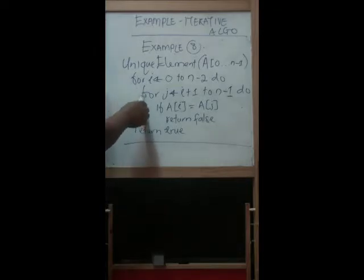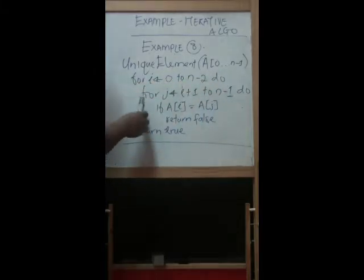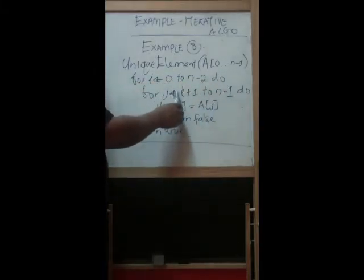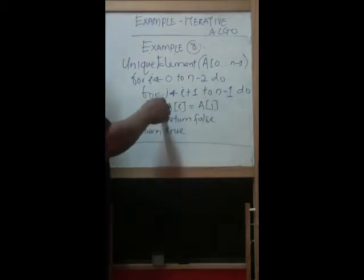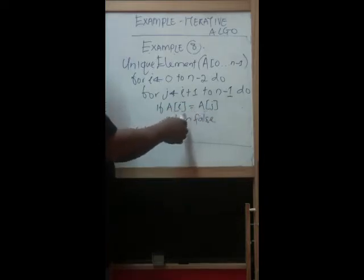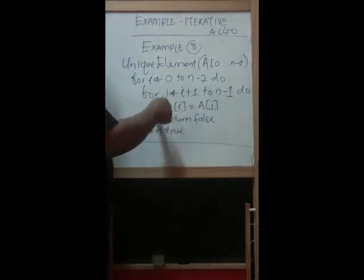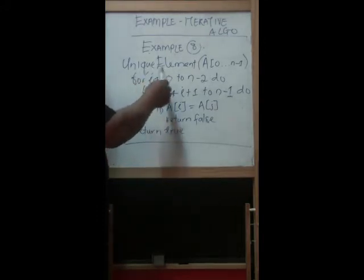We have two loops here. The outer loop has i equal to 0 up to n minus 2, increasing by 1. The inner loop has j equal to i plus 1, starting from 1 up to n minus 1. We test if a[i] equals a[j] — if true, return false. Otherwise, if every element passes, return true, meaning all elements are distinct.